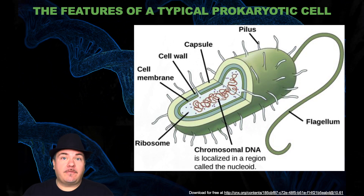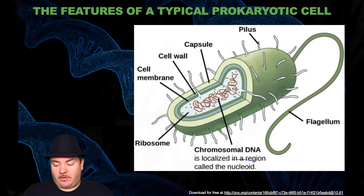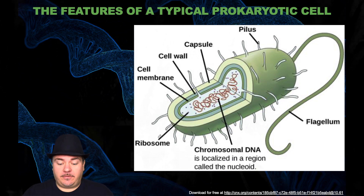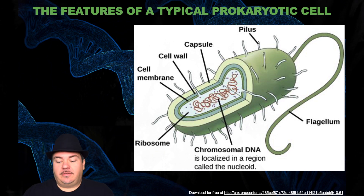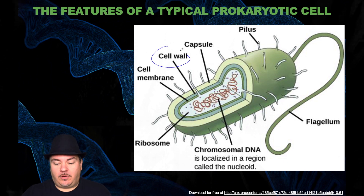Prokaryotes do not have any membrane-bound organelles, so they don't have a nucleus, for example. But they do have a chromosome, which is located in a region called the nucleoid. They do have their own ribosomes inside the cell. They also have a cell membrane, and then outside the cell, they have a cell wall.